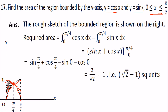We need to find the shaded area between the curves. The area from 0 to π/4 under cos x minus the area under sin x gives us the required region. Integrating (cos x minus sin x) from 0 to π/4 gives [sin x + cos x] from 0 to π/4, and applying the limits gives √2 minus 1.